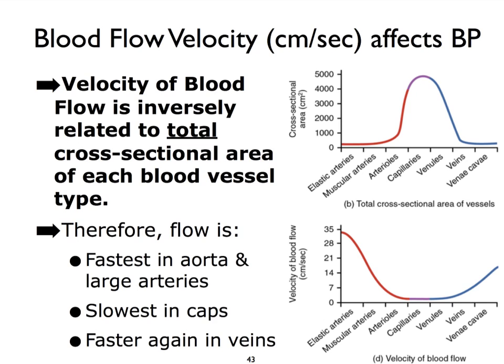Now let's take a look at the bottom graph, where we focus on the velocity of blood flow expressed in centimeters per second across the various blood vessels laid out in the same order as they occur in the circulatory pathway. Notice that these two graphs are totally opposite one another. The total cross-sectional area in the capillaries is the highest, and blood flow velocity in the capillaries is slowest. This makes sense because we don't want the blood to rush through the capillaries — they function in gas exchange, nutrient and waste exchange, and other functions — so we want the blood to be really sluggish there.